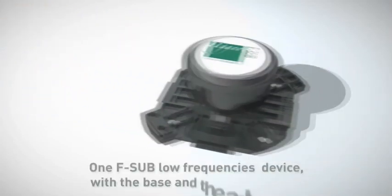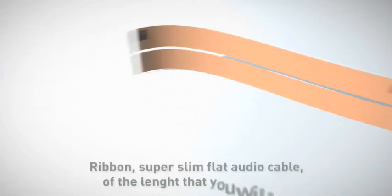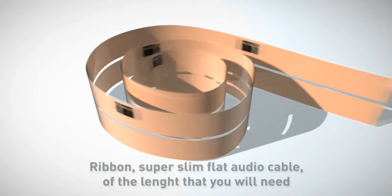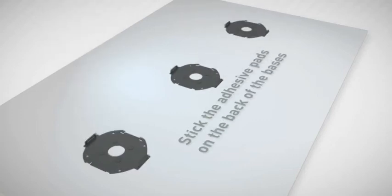One F-sub low frequencies device with the base and adhesive pad. F-ribbon super slim flat audio cable of the length that you will need. Stick the adhesive pad on the back of the bases.